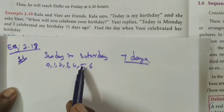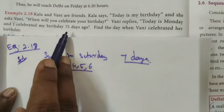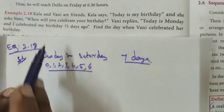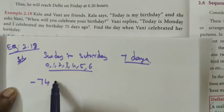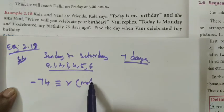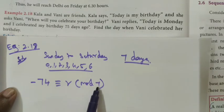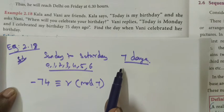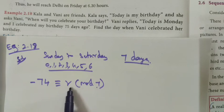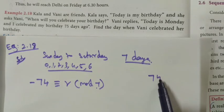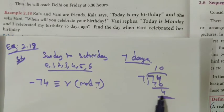Monday is assigned the number 1. 75 days ago — before 75 days, the day is Monday — so we calculate 1 minus 75, which equals 1 minus 74, congruent to R mod 7. When they are asking about days, we divide by 7. So 1 minus 74 is congruent to R mod 7. Dividing 74 by 7: 7 times 10 is 70, so the remainder is 4.